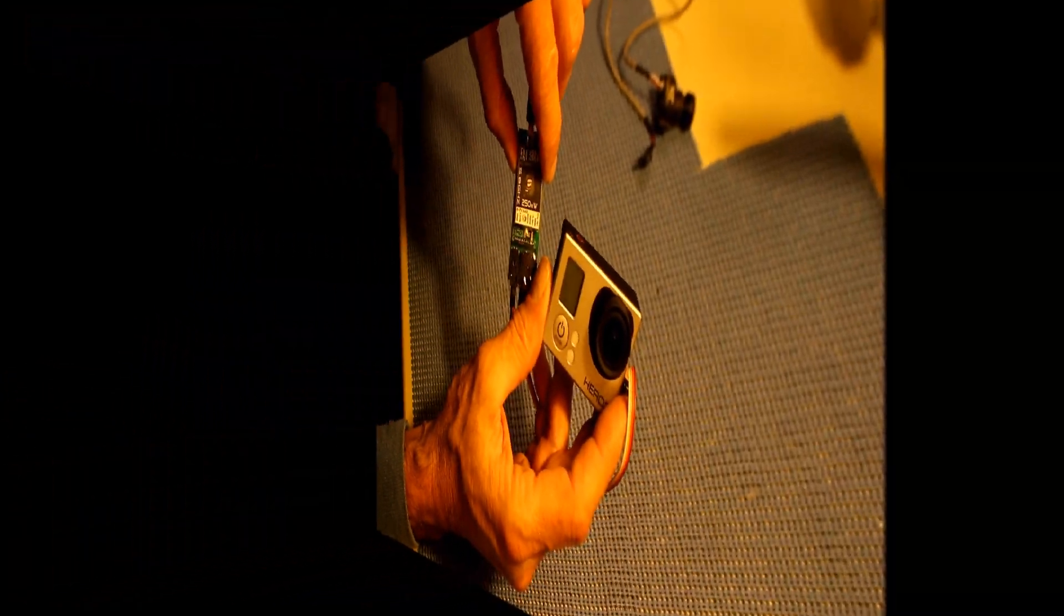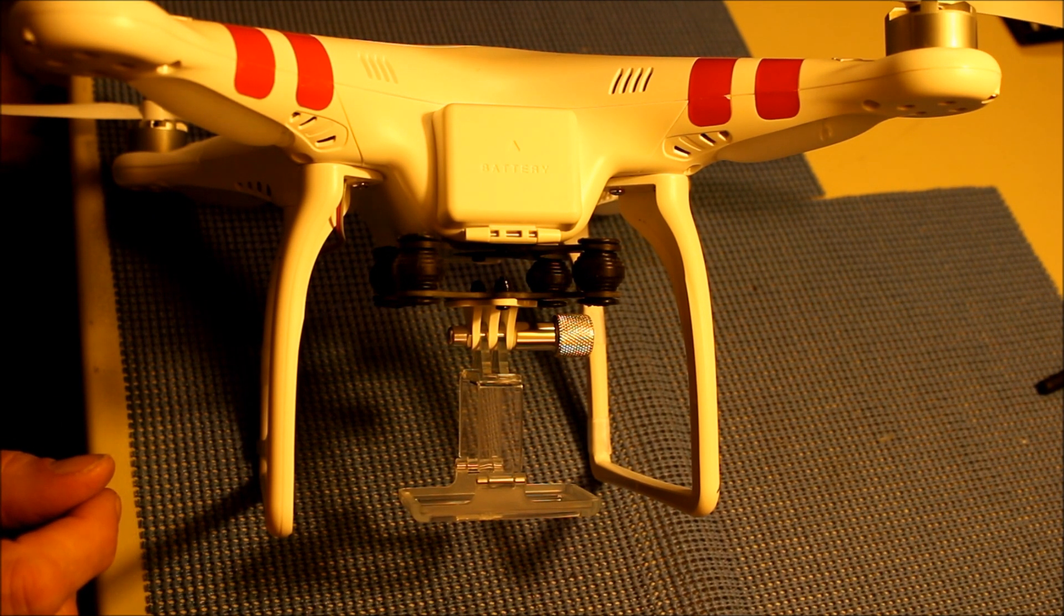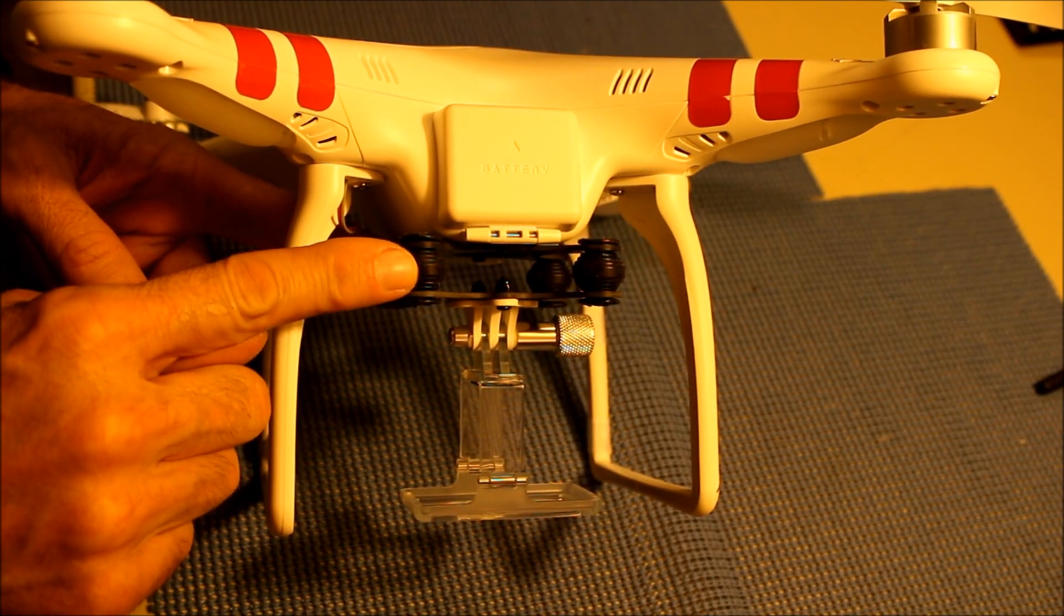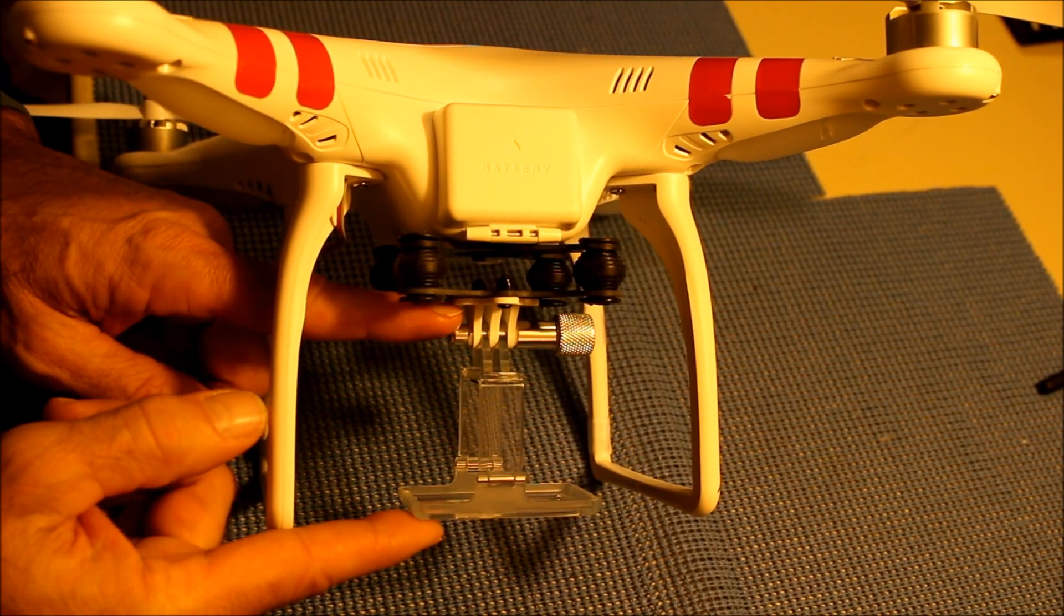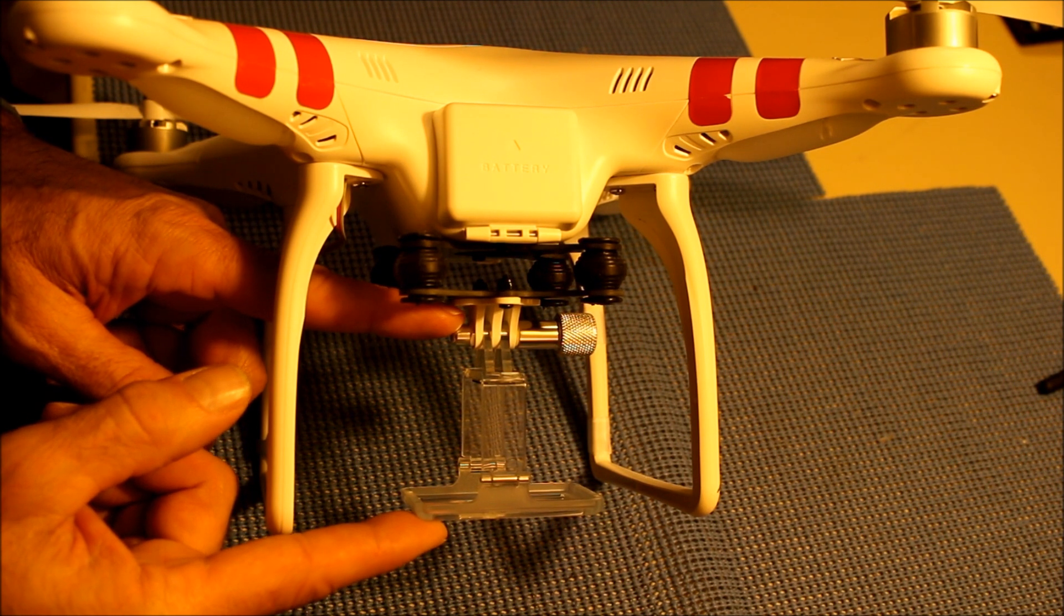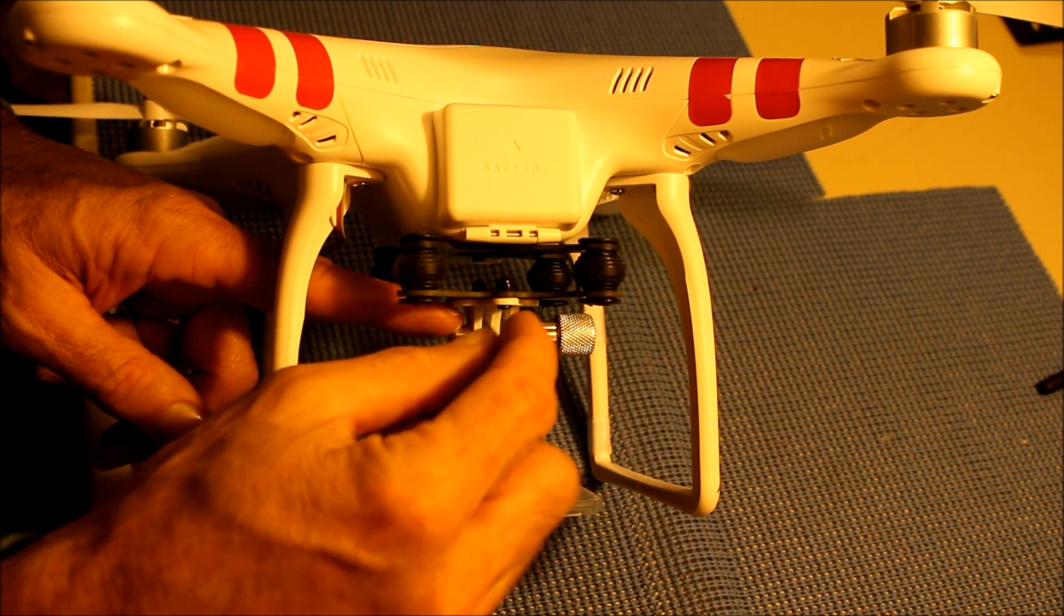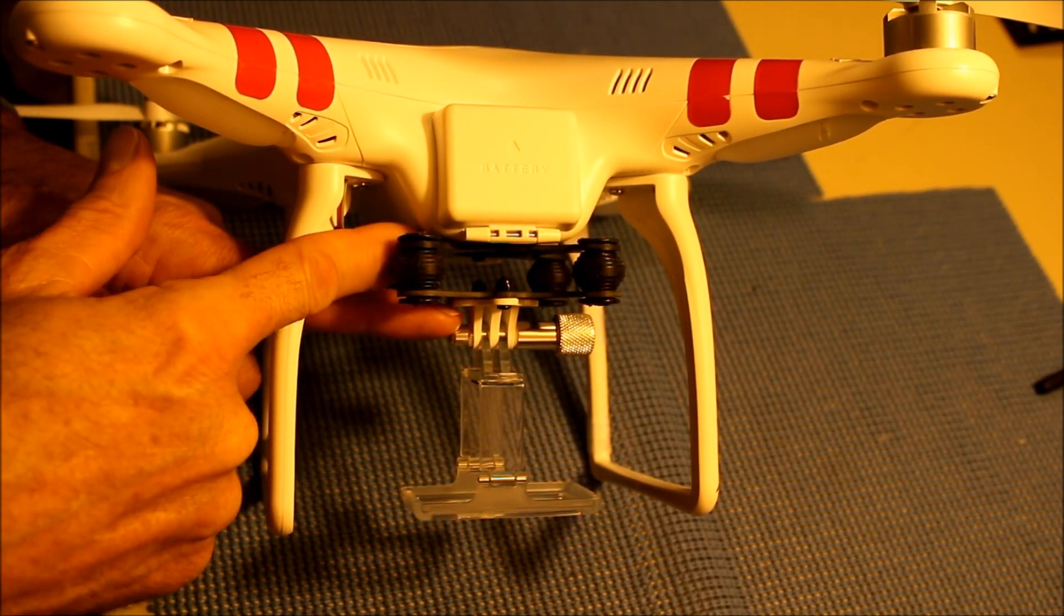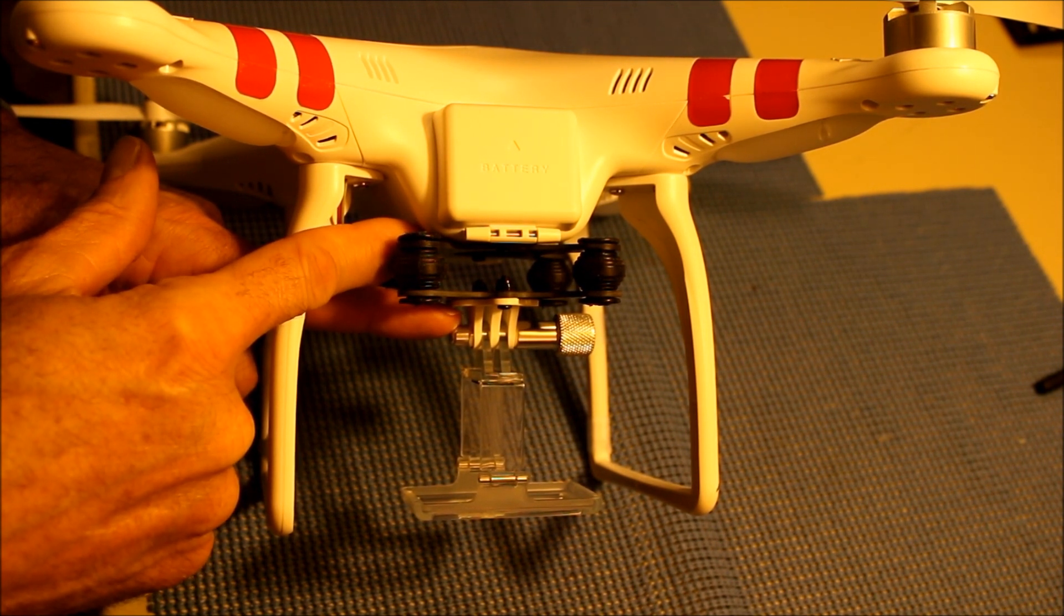Before we go any further I'd like to explain one accessory that I've added to my quadcopter and it's everything you see in black here. My quadcopter came with a bracket for mounting the Hero 3 camera and the bracket is shown in clear here and it has a white bracket. This white part connected directly and firmly to the bottom of the quadcopter.